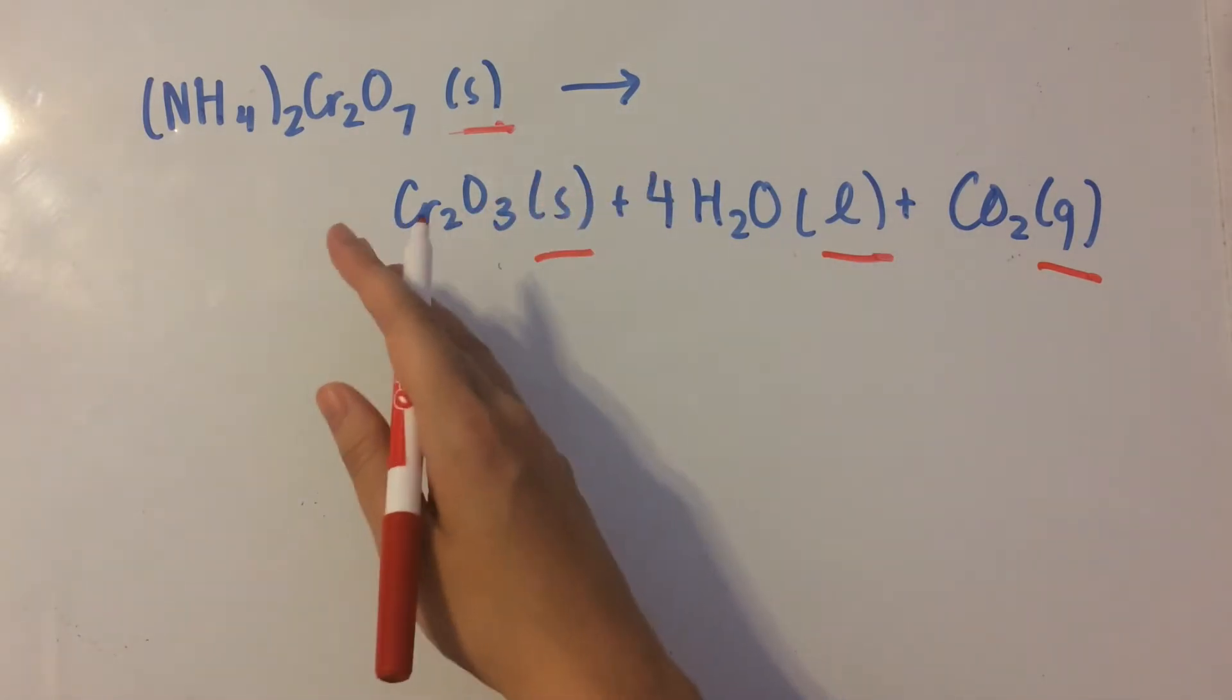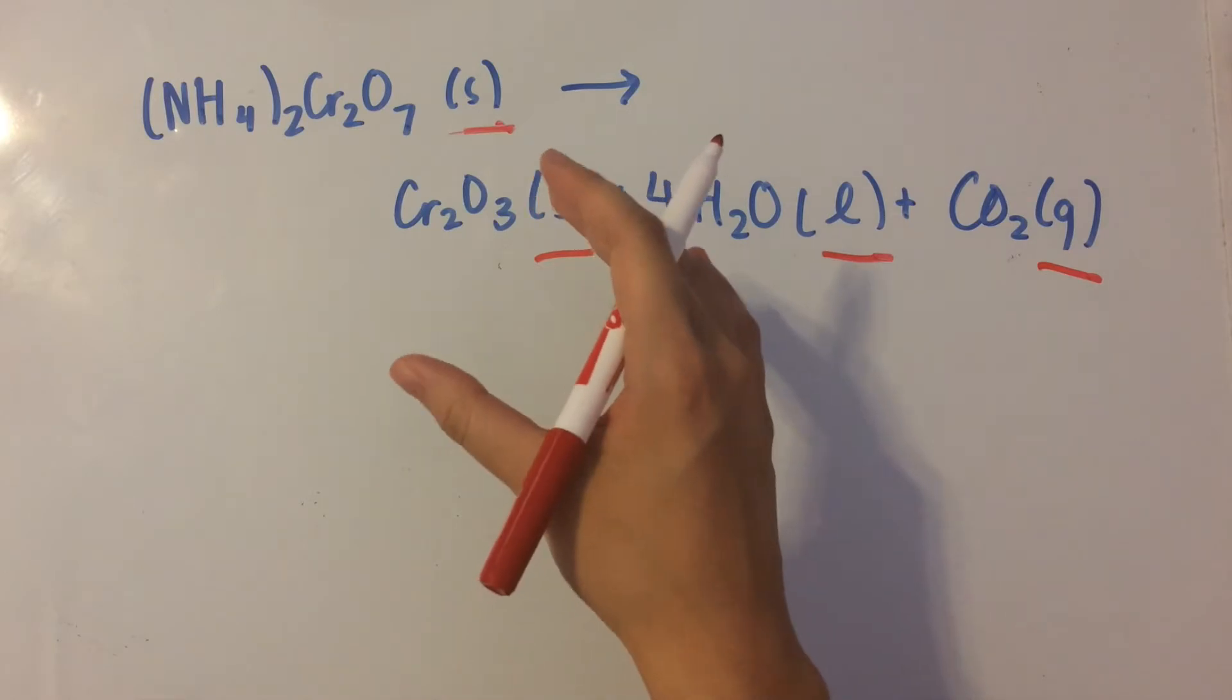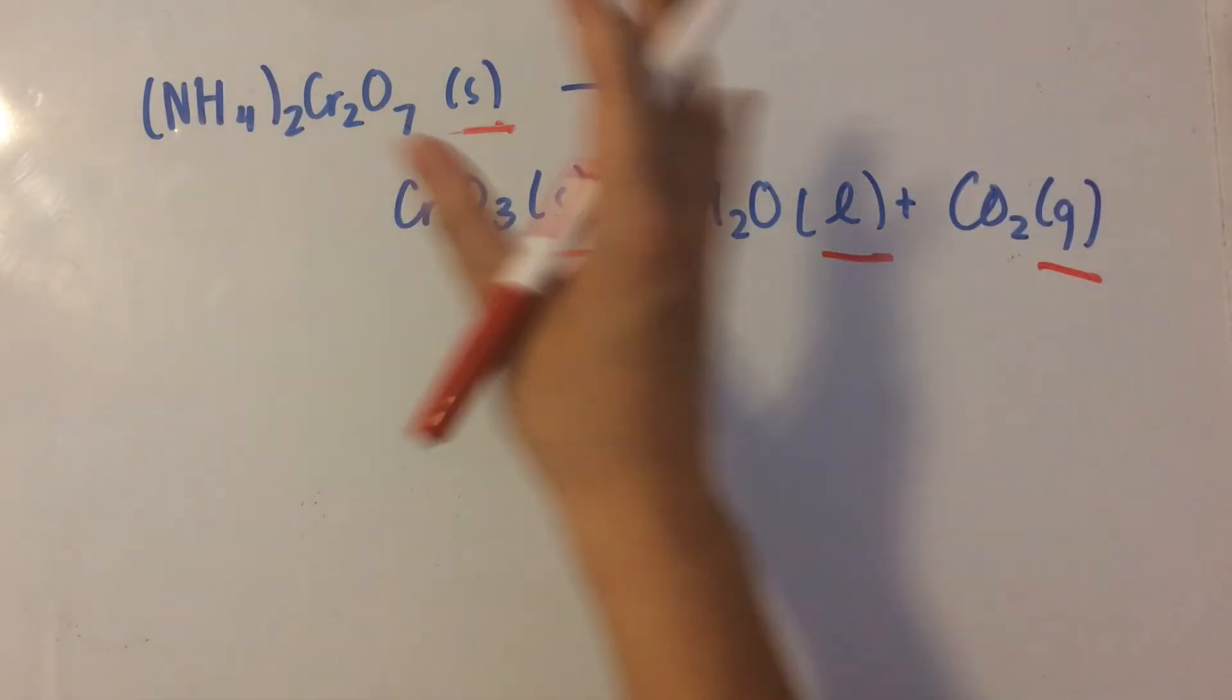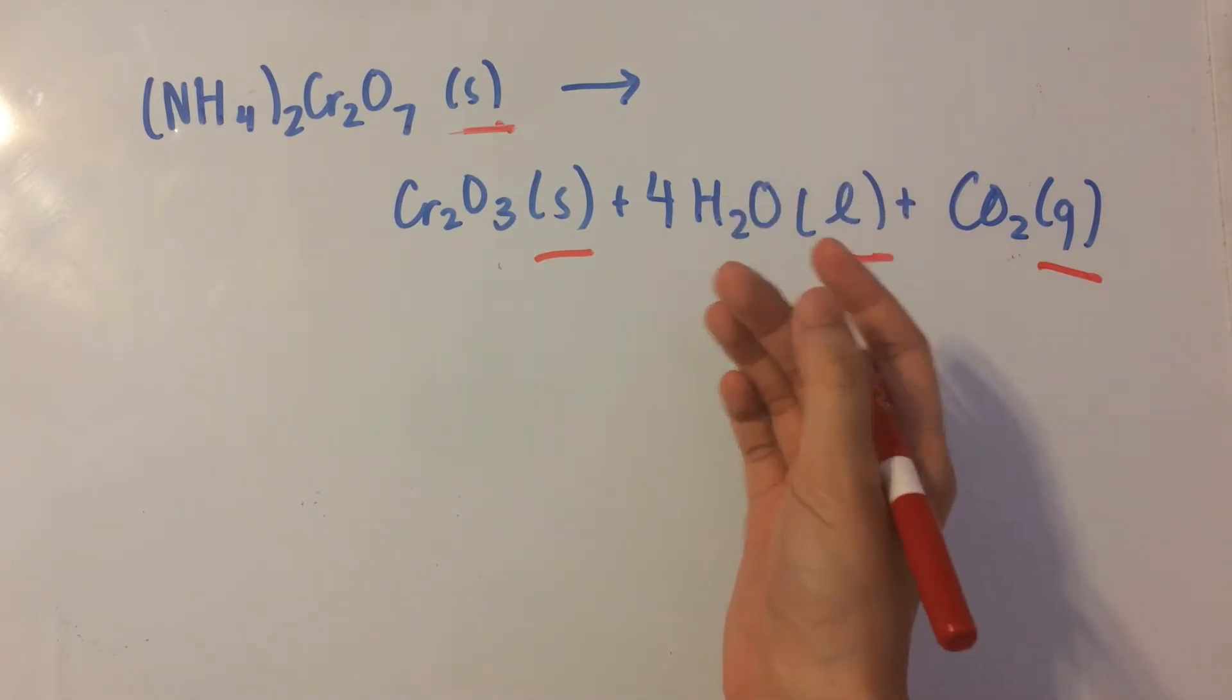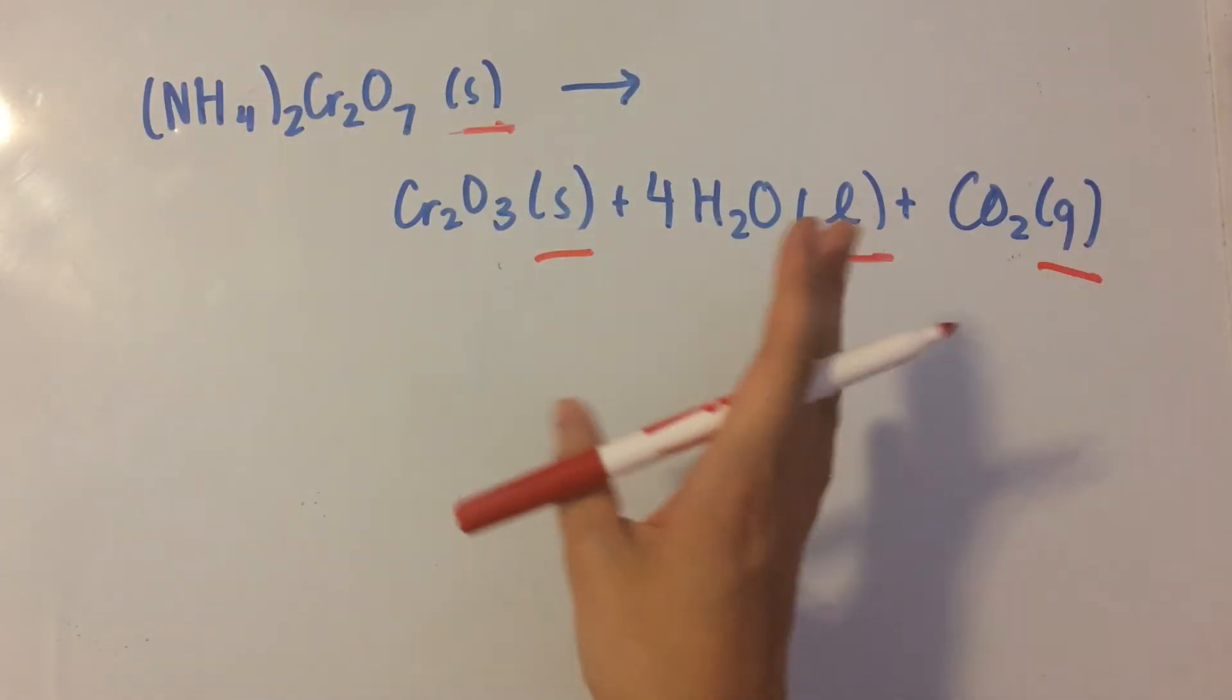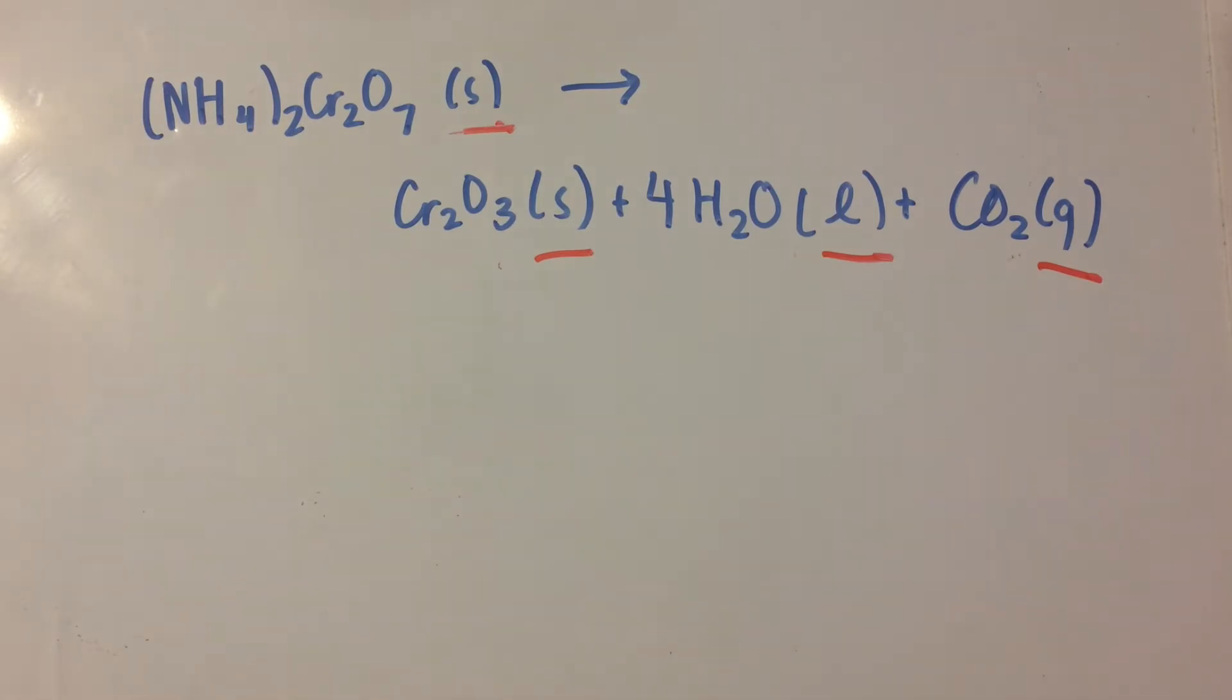Then liquids have a little more entropy than solids because they can freely move around, and gases have the most entropy because they just take whatever shape and the molecules just float freely.